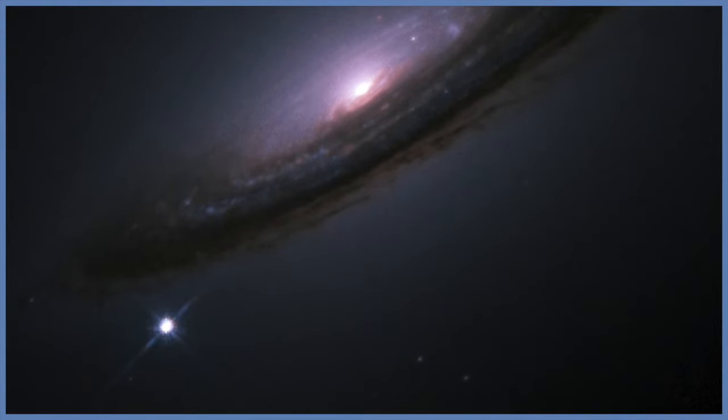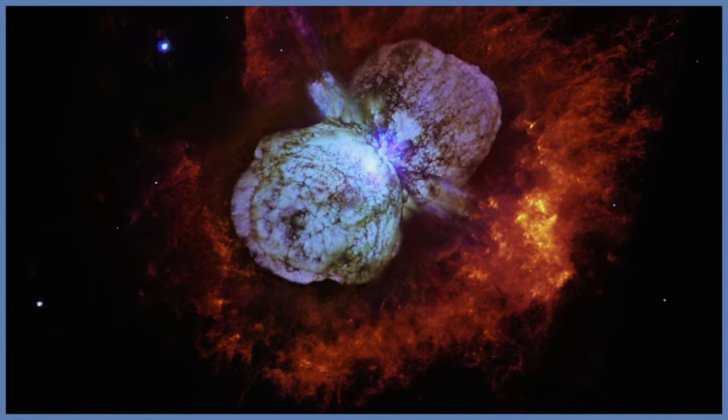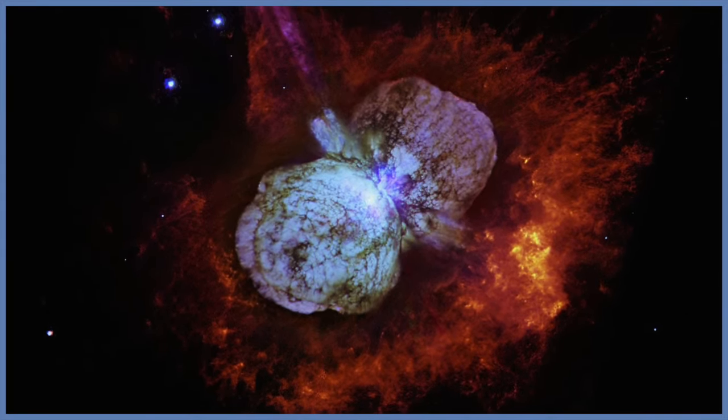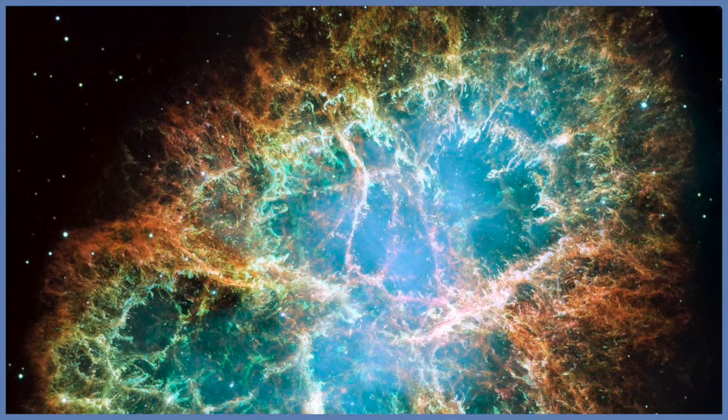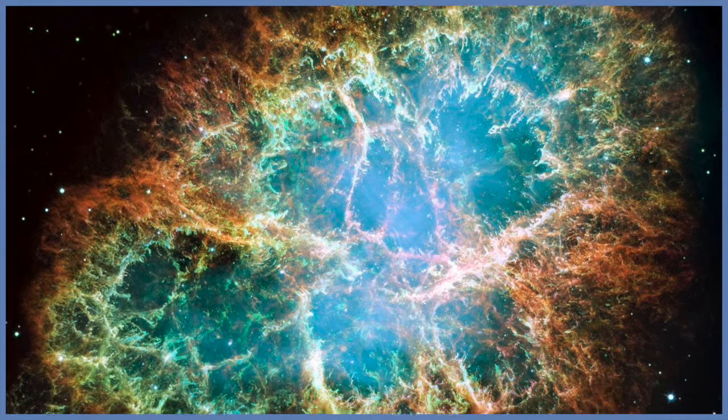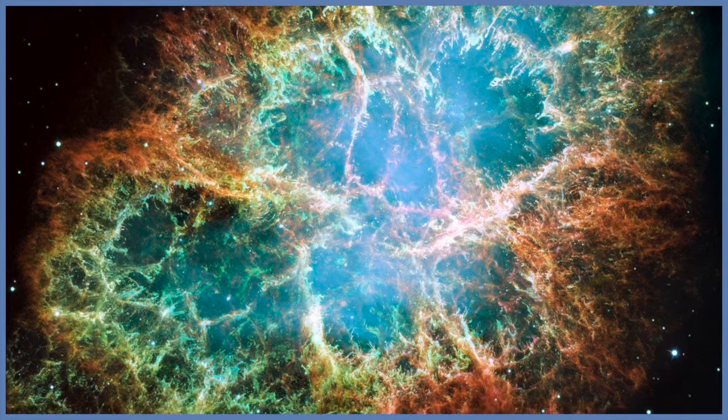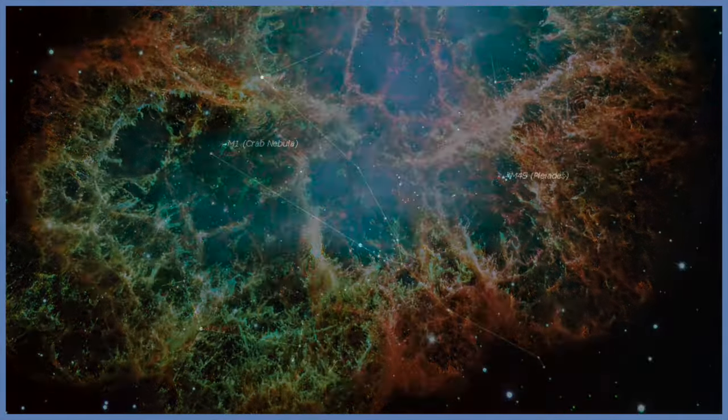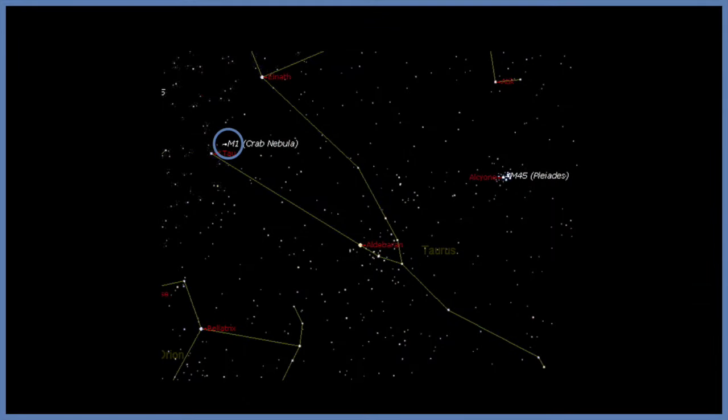Extreme versions of supernova explosions are sometimes referred to as hypernovae, and these produce gamma ray bursts. The most famous supernova in history was in July 1054. Records of this still survive from China all the way to North America. Seen today, roughly a thousand years later, its remnant is called the Crab Nebula, and it is one of the most interesting objects in the night sky. It can be found with a good pair of binoculars or a small telescope in the constellation of Taurus.